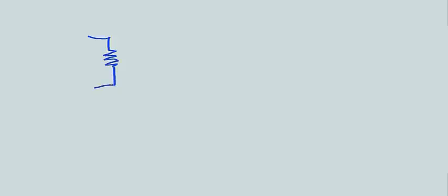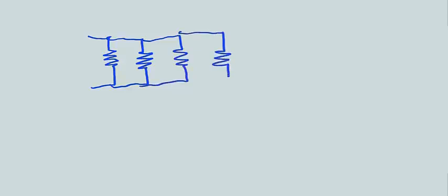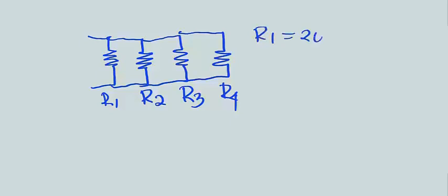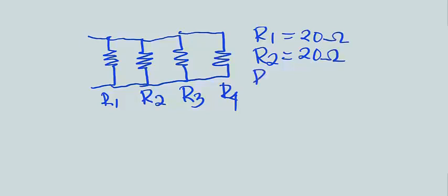Another example: four resistors — R1, R2, R3, and R4 — connected in parallel. R1 is equal to 20 ohms, R2 is equal to 20 ohms, R3 is equal to 20 ohms, and R4 is equal to 20 ohms.